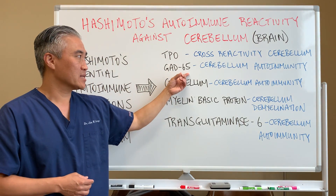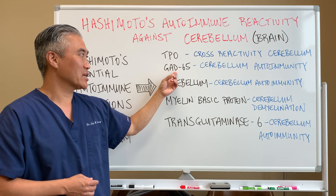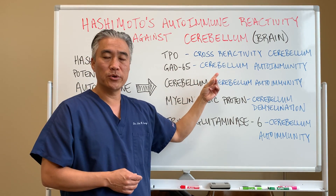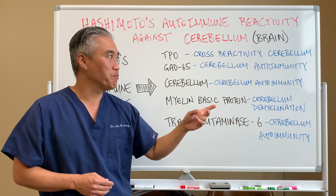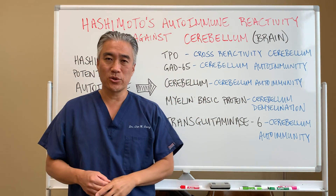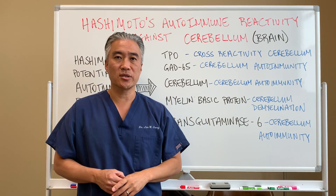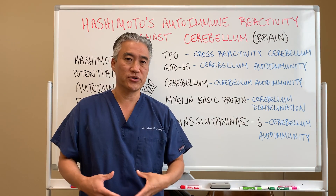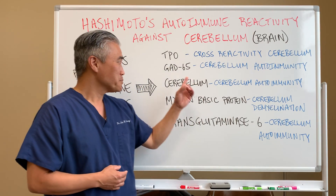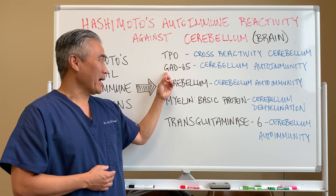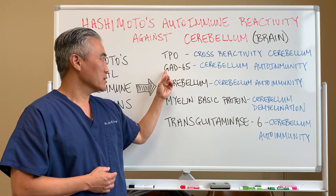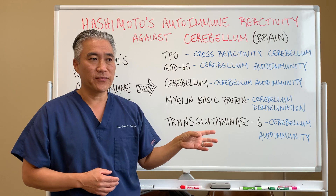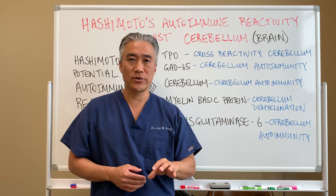Then we have GAD-65, or glutamic acid decarboxylase 65, and that is an autoimmune process of the cerebellum. GAD-65 is associated with other autoimmunities such as type 1 diabetes or stiff person syndrome. Basically, GAD — or glutamic acid decarboxylase — is an enzyme that converts neurotransmitters to GABA.